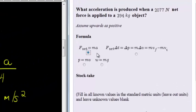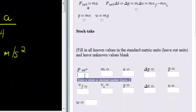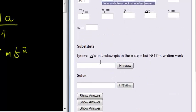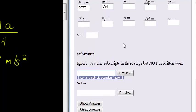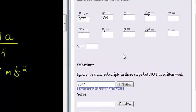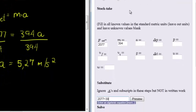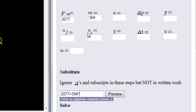Then we know that the net force was 2077, mass was 394. For the substitution step, 2077 is the net force I'm substituting into this formula. 2077 is equal to mass 394 times acceleration, and acceleration is what I want to calculate. So preview to see if it looks like that portion, and it does.